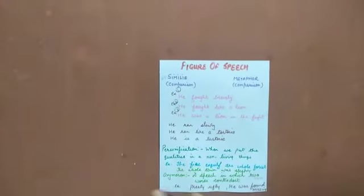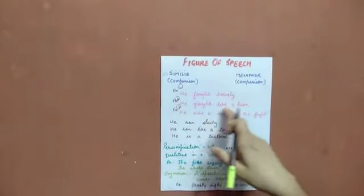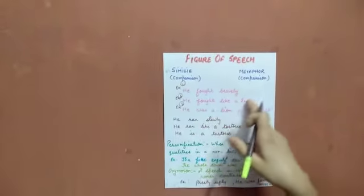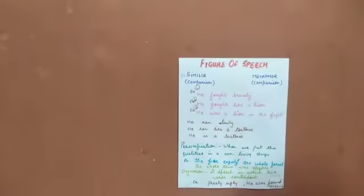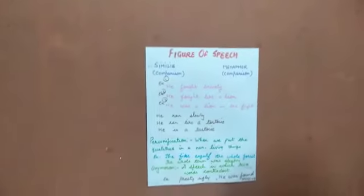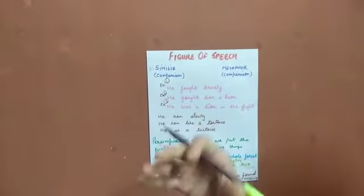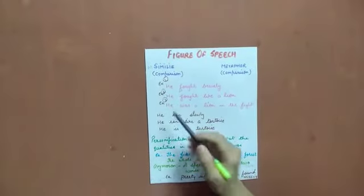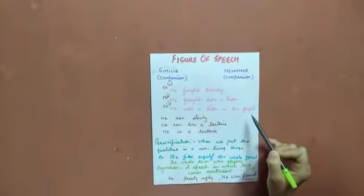Now, he fought like a lion. I am comparing a person to a lion. Is it possible that someone in a fight can be a lion? No, it is not. We are comparing to make the sentence more impactful. Now, in third sentence, what am I going to do, he was a lion in the fight.